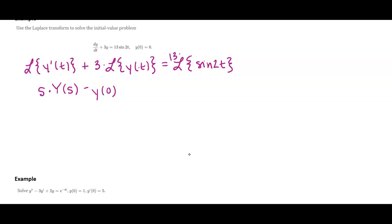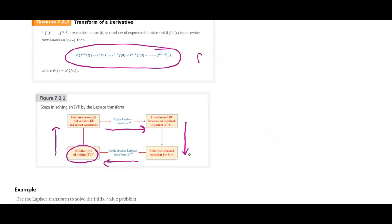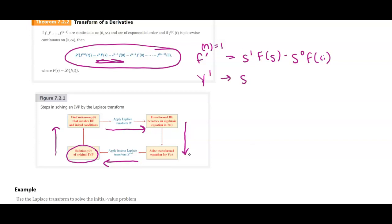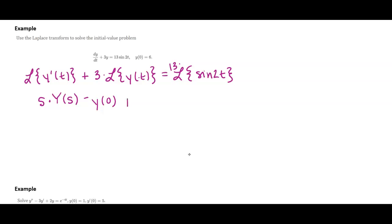I'm using that because here I have f prime, just the first derivative. So that's s to the 1 times big F of s minus s to the 0 times f of zero. Using y's instead of f's: y prime becomes s times capital Y minus y of zero, which is 1. Three times the Laplace of little y is just big Y. And 13 times the Laplace of sine of 2t is 2 over s squared plus 4.